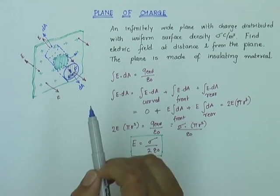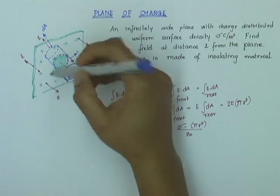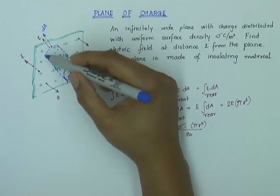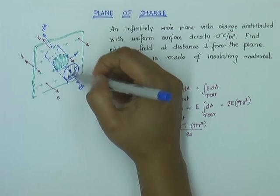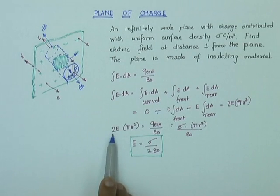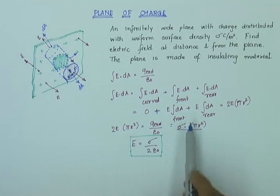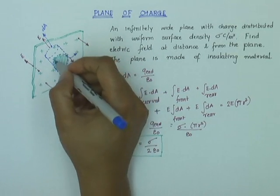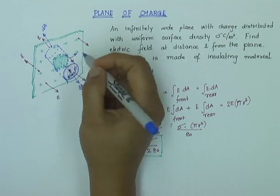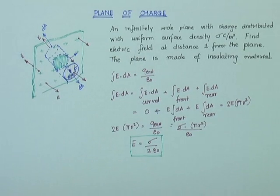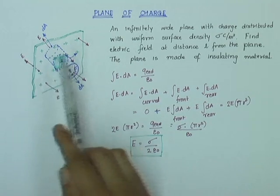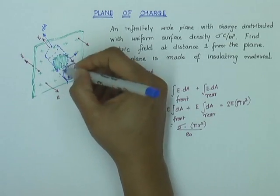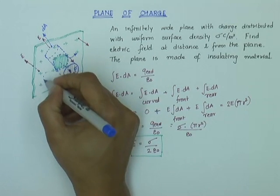Note that I need not have selected a cylinder. I could have selected a cuboid. What would have happened is this surface would have become a square, the other surface would have become a square, and the intersecting surface would also have become a square. E would have remained parallel to the sides and perpendicular to the ends. So I would have had 2E times the area of the square equals sigma times the area over epsilon zero. The areas cancel out and E remains the same. You can try it by picking a different surface that follows the planar symmetry.